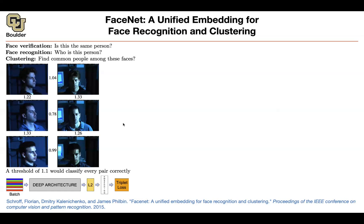We are going to write down a new loss function to solve this problem. The previous loss was a softmax-type loss, but this one is different — it is called triplet loss. You take an image, push it through your convolutional neural network, and end up with an embedding, a vector representation of that image.